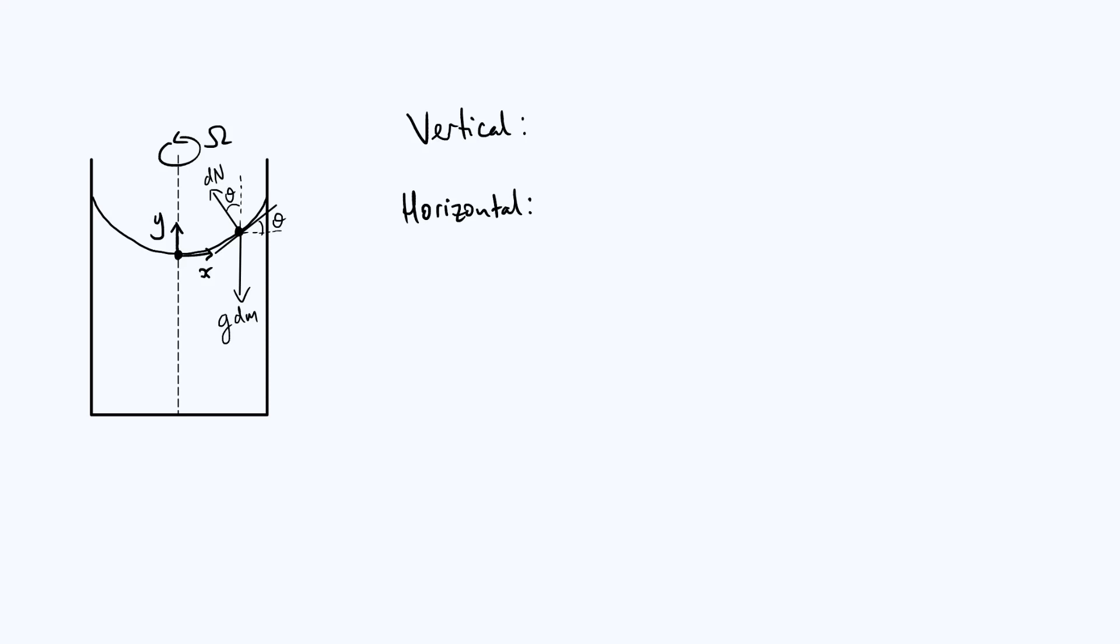Now we're ready to come up with some equations, and we can do that by considering the vertical and horizontal components of the forces. Vertically there can be no resultant force because it's performing a horizontal circle, it's not accelerating in the vertical direction. So you have an upwards component of the normal force, which is dn cos theta just by resolving your dn, and that must balance with the weight, which is gdm. That gives us one equation, let's call it equation one.